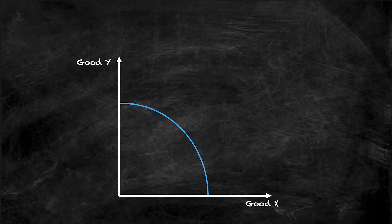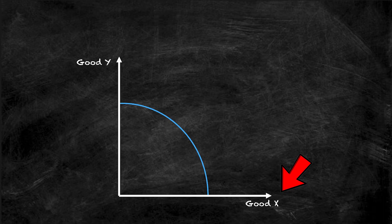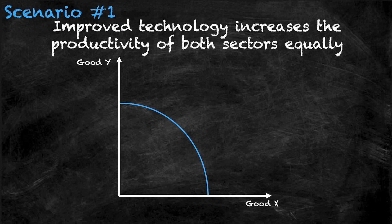In this video we have five scenarios which affect our production possibilities frontier for an economy with two goods. Let's call the good on the x-axis good x and the good on the y-axis good y. The scenarios will progressively get more difficult as we go, so stay tuned if you want an example of every type of movement that you can do. Now let's start with scenario number one.